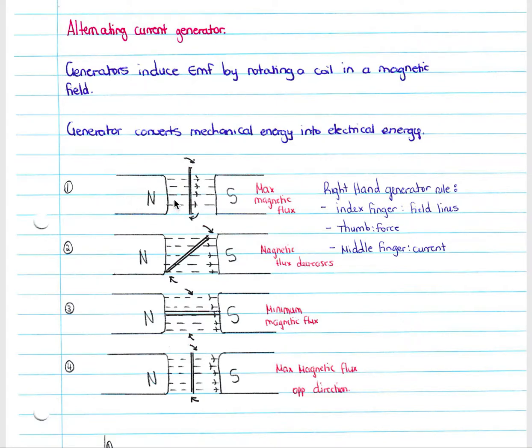We have a magnet with a north pole and south pole, a magnetic field between the two poles, and a rotating coil in the magnetic field.